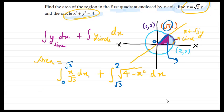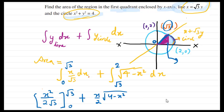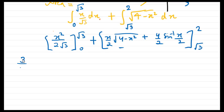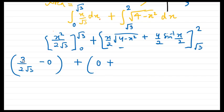Now we can solve it. The integral of x/√3 dx from 0 to √3 gives x²/(2√3), evaluated from 0 to √3, which gives 3/(2√3) = √3/2. For the circle part, the integral of √(4 − x²) dx from √3 to 2 uses the formula: [x/2 · √(a² − x²) + (a²/2) · sin⁻¹(x/a)], giving us 2·sin⁻¹(1) at the upper limit, where the first term becomes 0.